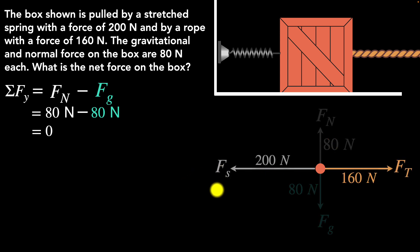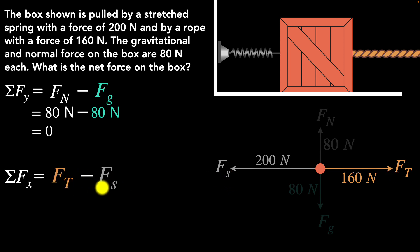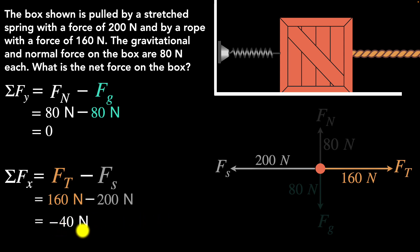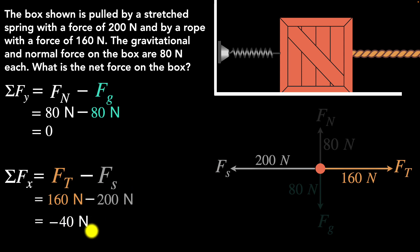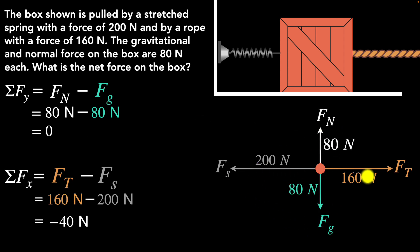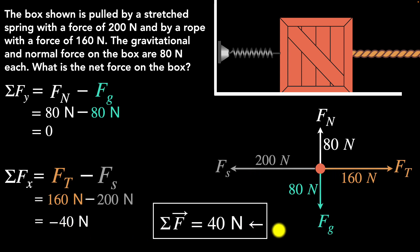Now let's consider the forces in the horizontal, the x direction. Let's choose the right side as positive. So we have a positive tension force and a negative spring force. Plugging in: 160 newtons minus 200 newtons gives minus 40 newtons. The minus sign means the net force is towards the left — which makes sense, since the spring force is larger than the tension force. So the net force in the horizontal is 40 newtons to the left, and the net force in the vertical is zero, making the total net force on the box 40 newtons to the left.